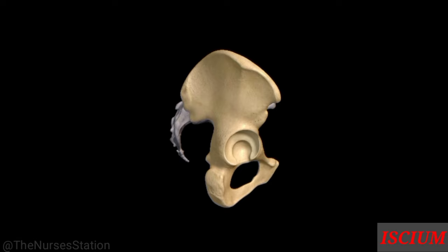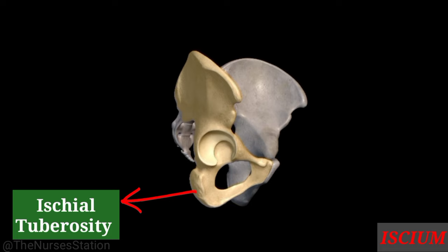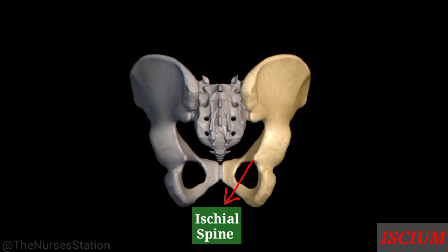The next portion of the innominate bone is the ischium. The ischium forms the inferior posterior portion of the hip bone and is composed of a superior body and an inferior ramus. The ramus is the portion that fuses with the pubis inferiorly. The ischium has a rough area called the ischial tuberosity, and posteriorly a prominent structure known as the ischial spine.